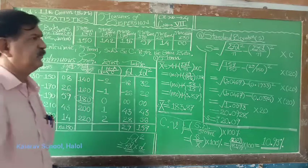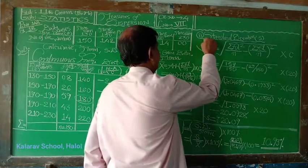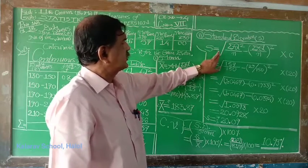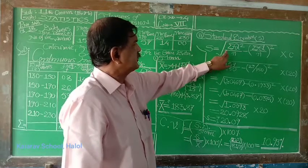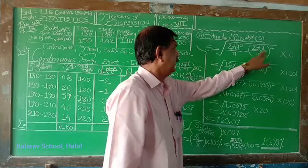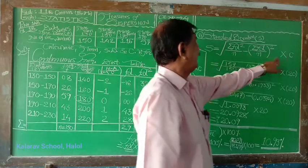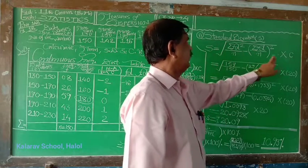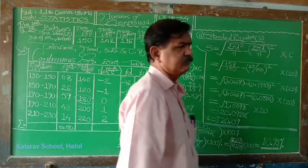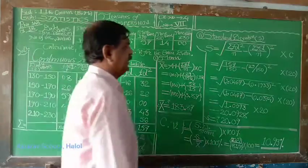Calculate standard deviation this way. Standard deviation is given by s, square root of sigma f into d square upon n, minus sigma fd upon n complete square. Outside the root, multiply by c. Substitute the value, this is 157, 157 for total of the last column.